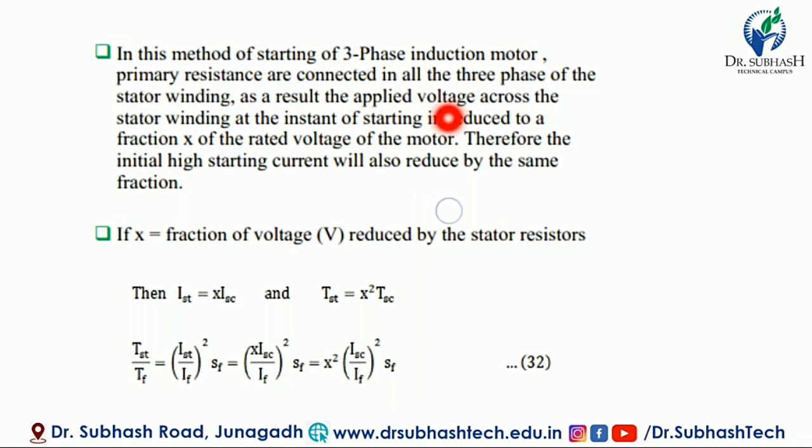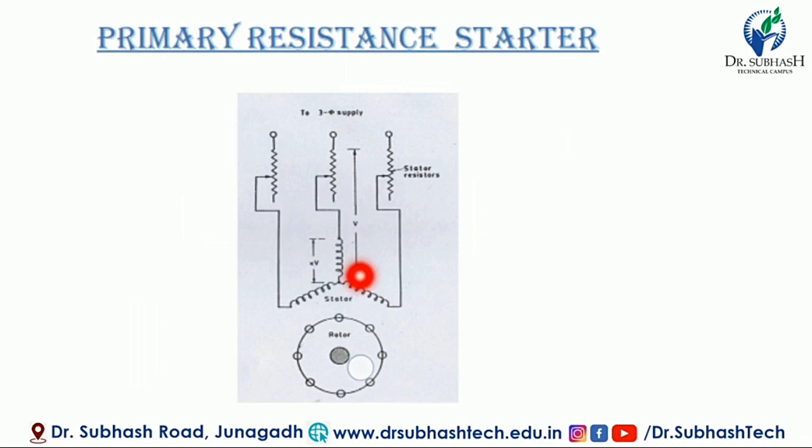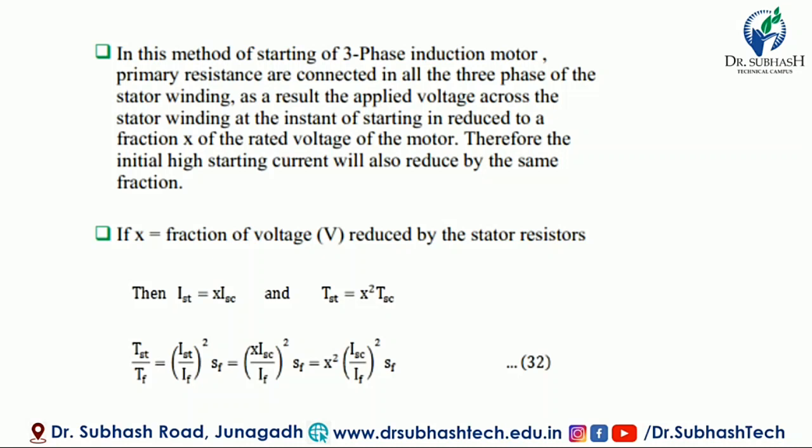Applied voltage — as a result, the applied voltage across the stator winding at the instant of starting is at a fraction X of the rated voltage of the motor. The full supply voltage is V, so the supply voltage applied is X. The fraction X is the rated voltage of the motor. Therefore, the initial high starting current will also be reduced by the same fraction.